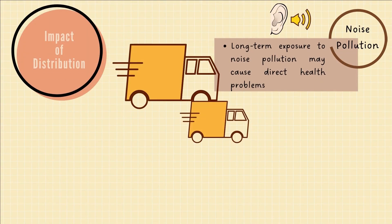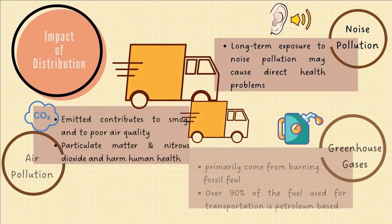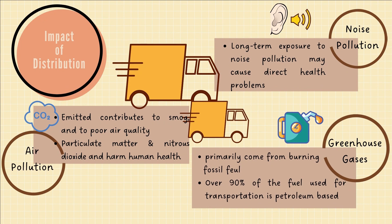Moreover, the distribution process contributes to environmental impact, producing noise pollution from the lorries that transport cooking oil to supermarkets. Long-term exposure to noise pollution may cause direct health problems to humans such as sleep disturbance, stress, asthma, high blood pressure, and cardiac diseases. Air pollution emissions are based on miles traveled, ton-kilometers of goods transported, and quantity of energy consumed. Emissions from transportation contribute to smog and poor air quality, with particulate matter and nitrogen dioxide also harming human health. Transportation by truck emits greenhouse gases, primarily from burning fossil fuels — over 90% of the fuel used for transportation is petroleum-based, including gasoline and diesel.